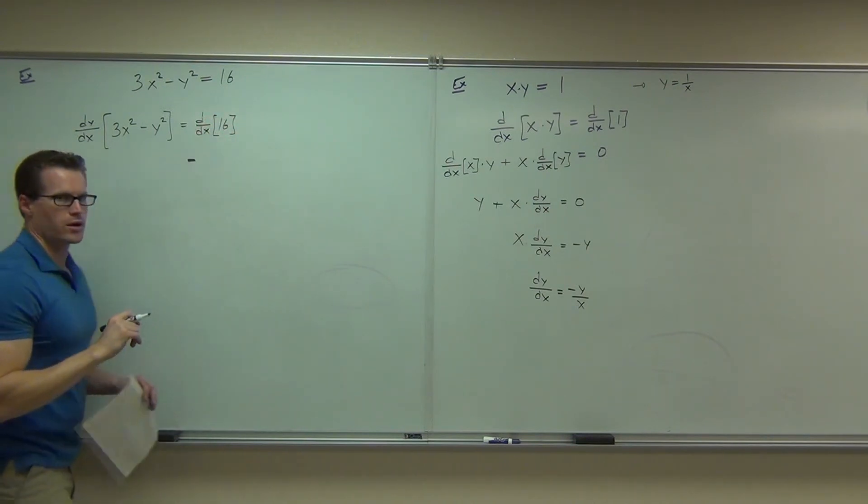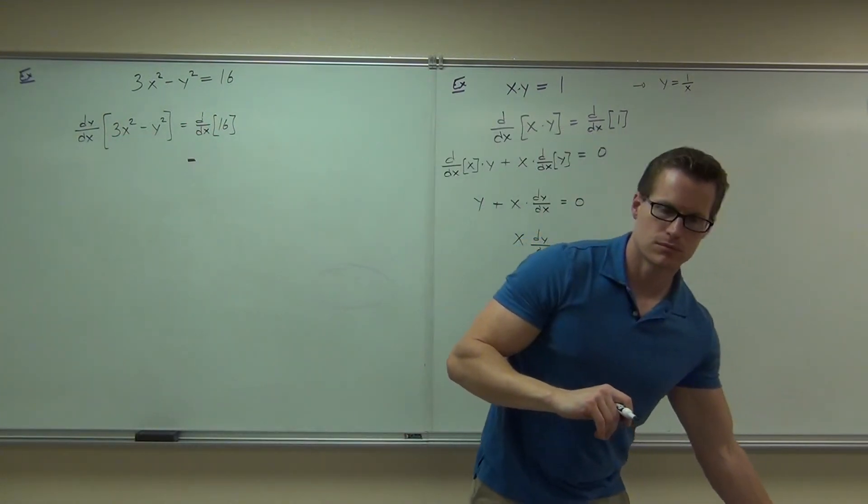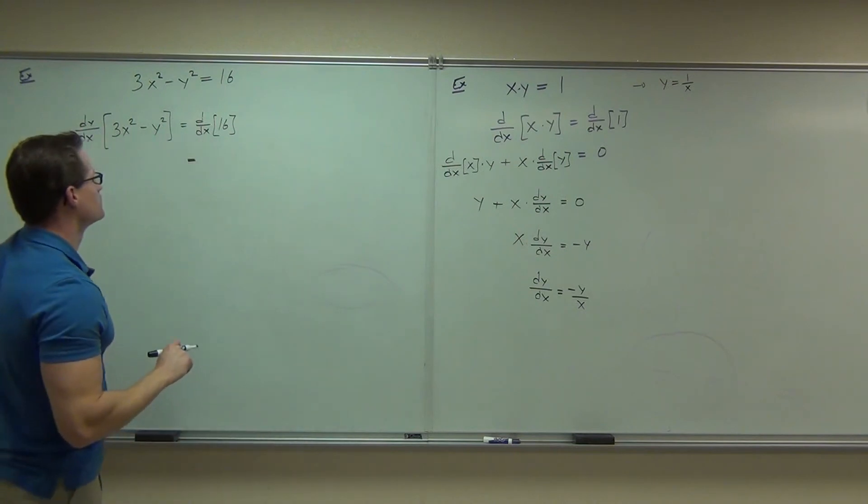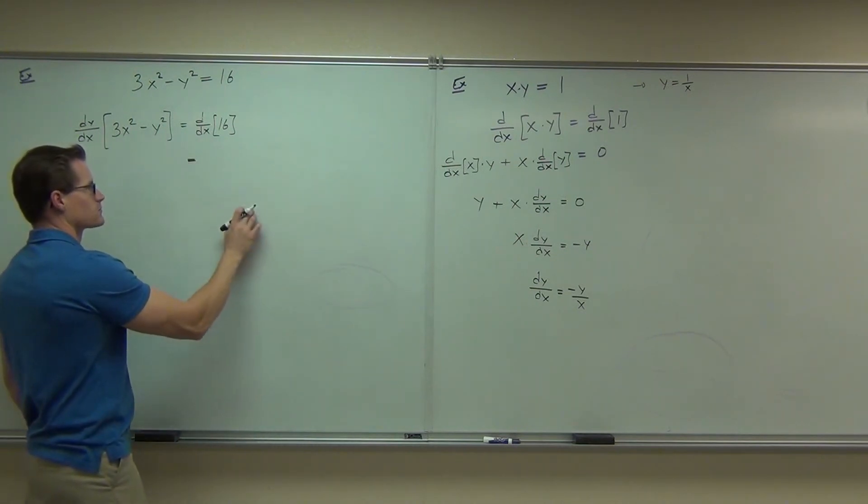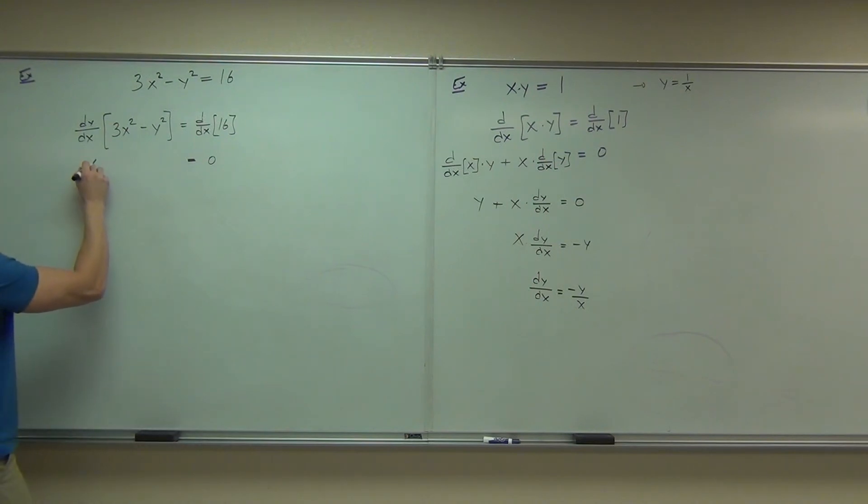Do you need a product rule for this problem? No. Thankfully. So that becomes 6x. That becomes 2y. Did you get the dy/dx?